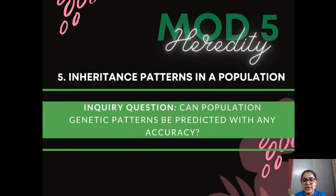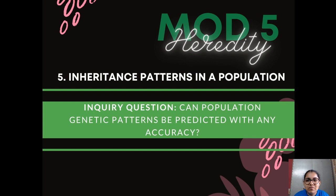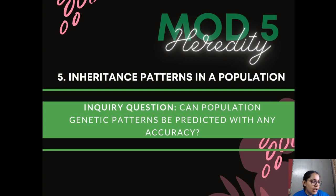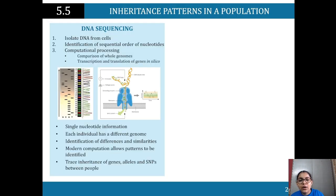Inheritance patterns in the population — this is the last part of this module. By the time you get here it can feel like a long, tiresome module, so have some patience. It's not a big dot point; it's looking at the big picture of how population genetic patterns can be predicted with accuracy, why that's important, and we'll talk about preservation and conservation strategies.